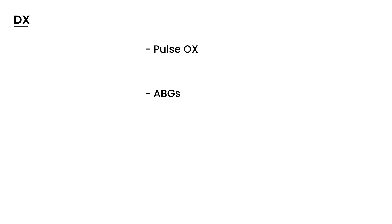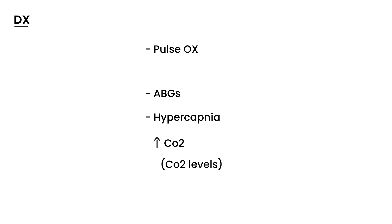Other things you can do in the diagnostic workup of croup include placing a pulse oximeter on the child to monitor their oxygen saturation. Arterial blood gases are important because, after a while, a child can get tired and eventually develop hypercapnia — when CO2 levels rise — and that needs to be measured if the child's condition worsens. You'll also want to check temperature.